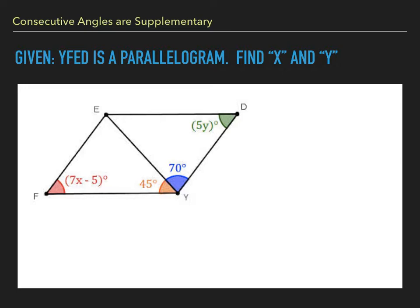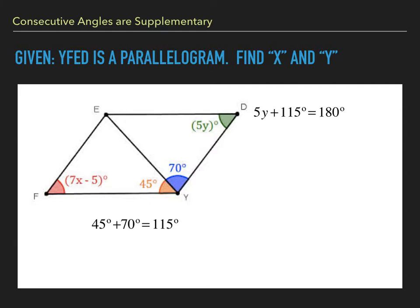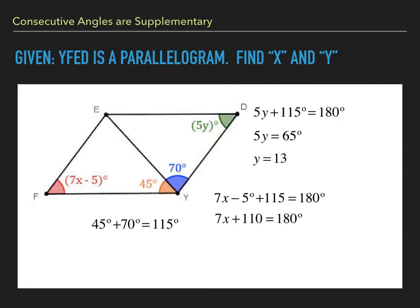That comes in handy when solving a problem like this: given YFED is a parallelogram, find X and Y. Angle Y, by the angle addition postulate, has a measure of 115 degrees. Angles Y and D are supplementary, so 5Y plus 115 equals 180. Similarly, angles F and Y add to 180. Solving for Y and rewriting the bottom equation as 7X plus 110 equals 180, subtracting 110 from both sides and dividing by 7, we get X equals 10.